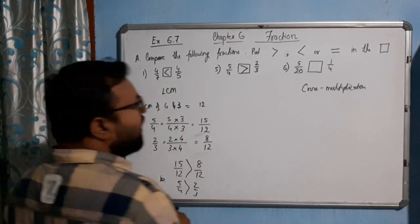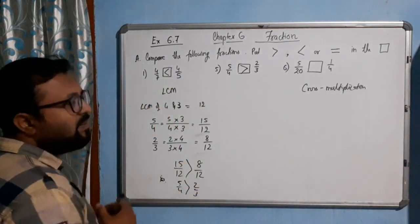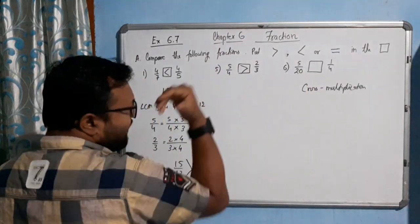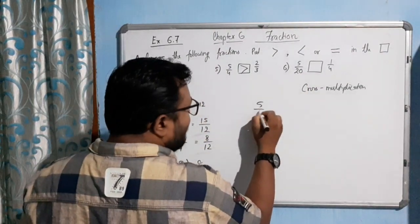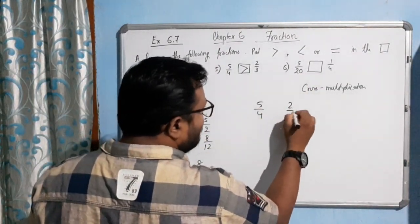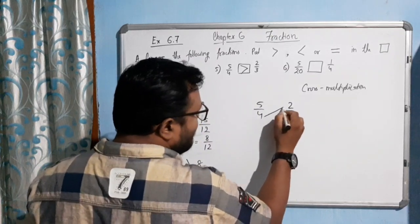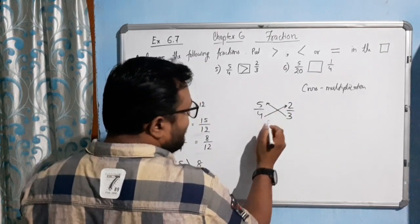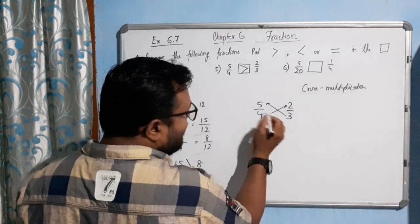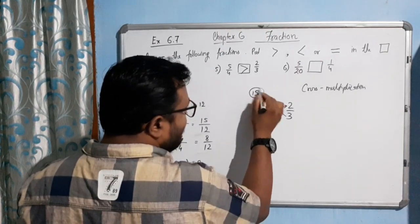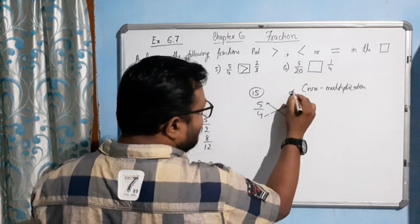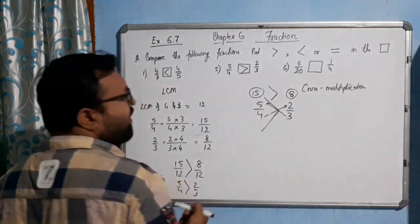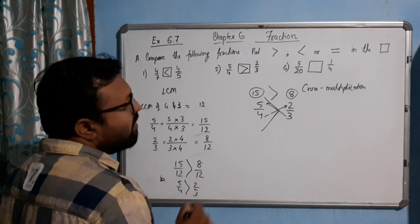Now let's use cross multiplication on the same example: 5/4 and 2/3. We cross multiply: 5 × 3 = 15 and 4 × 2 = 8. Since 15 is greater than 8, the fraction on that side — 5/4 — is greater. This confirms our earlier result.